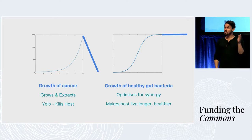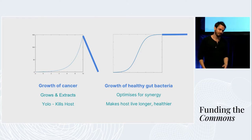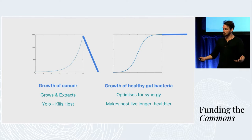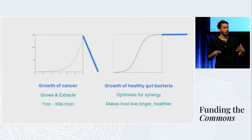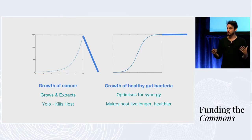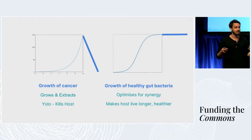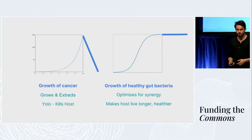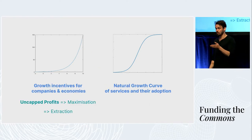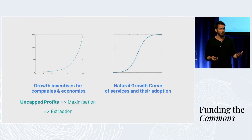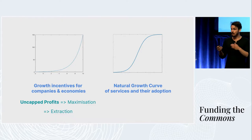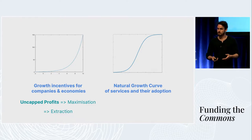What's not in that curve is the end of the curve, which means on the cancer side, it will actually extract until it kills its host. And on the other hand, the gut bacteria optimizes for synergy — it makes the host live longer and healthier. But it's also the growth incentives that we deploy currently when we invest in companies and the natural growth curve of the services they represent.